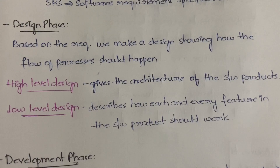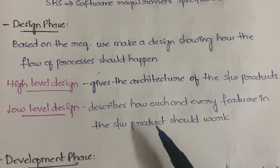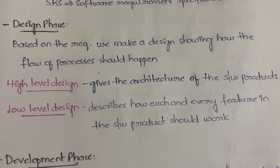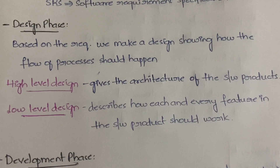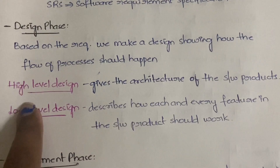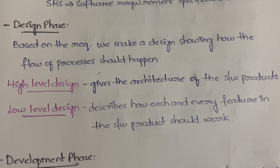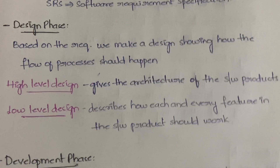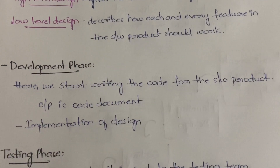In design we have two types: High Level Design and Low Level Design. High Level Design gives the architecture outline of the software product. Low Level Design describes how each and every feature in the software should work. For example with a house: the High Level Design is the building plan — the overall architecture. The Low Level Design covers details of each room, like what kind of kitchen you want — modern, open, with cupboards or drawers.